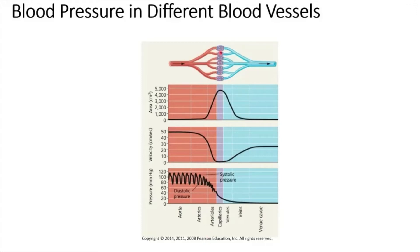From capillaries, blood flows into venules, veins, and venacava. Total cross-sectional area decreases in the venules and veins. Venacava has the lowest total cross-sectional area, so blood flow velocity increases — but it is still much lower than in the aorta. Blood pressure drops even further in the venules and is almost zero in veins and venacava.